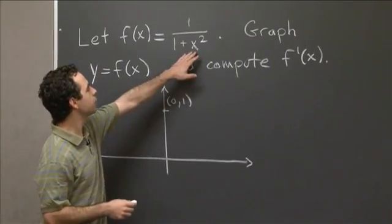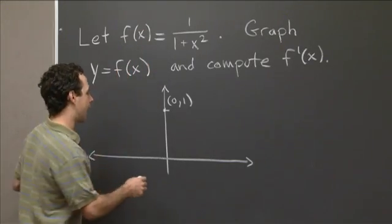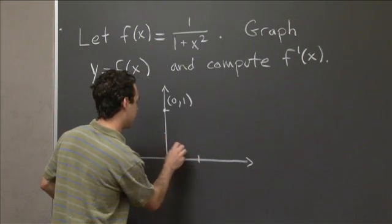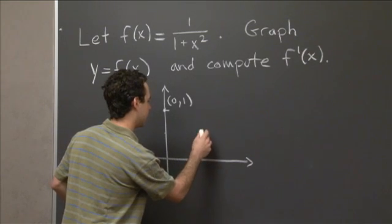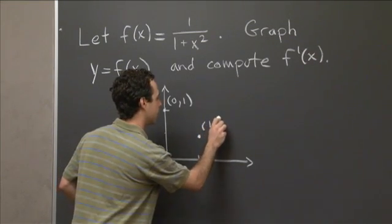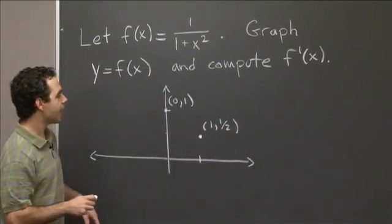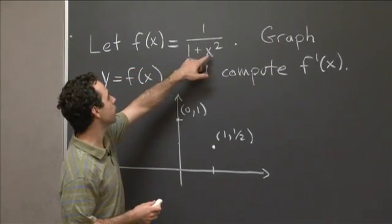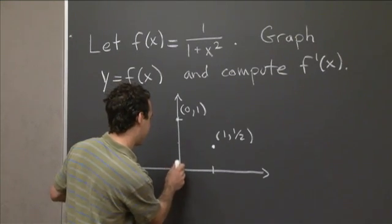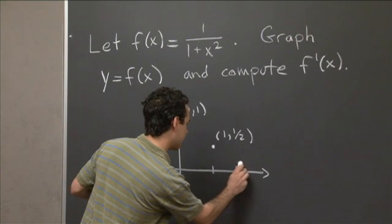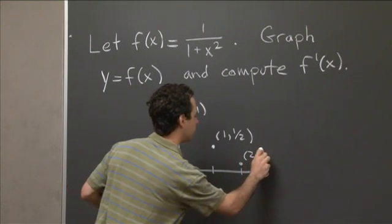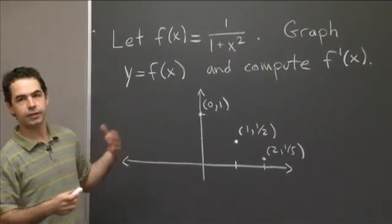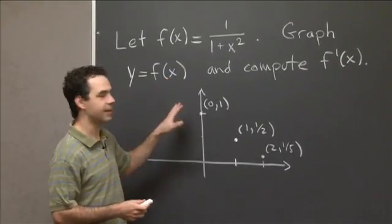And when x is equal to 1, x squared is 1, so the denominator is 2, so the function value is 1/2. I'm not going to draw this to scale. I'm going to put x equals 1 here, and the function value is 1/2. So this is the point (1, 1/2). We could do one more. When x is equal to 2, 2 squared is 4, so that's 5, so it's 1/5. 1/5 is smaller than 1/2, so that's maybe down here. This is something like the point (2, 1/5). This is a very rough idea we're getting.